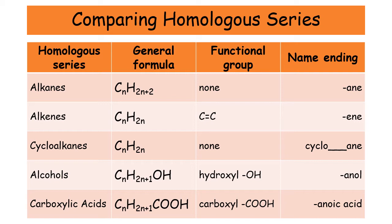For alcohols, the functional group is called hydroxyl — you need to know that name — and it is the OH group. For carboxylic acids, the functional group is carboxyl. If you're ever stuck for what it's called, remember it is the first part of the word carboxylic acids. It is the COOH group. When drawing the functional group out, it is C double bond O, with an OH, and then there is another bond coming out of the carbon — that's where it gets its four bonds.